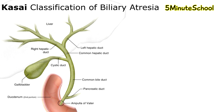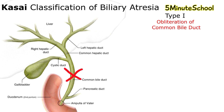Let's talk about type 1. I've put up an image of the biliary tree here, which will be useful to visualize which ducts in particular are affected by Biliary Atresia. So type 1 involves the obliteration of the common bile duct.